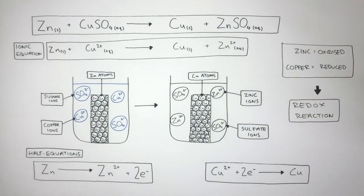In summary, this is a displacement reaction because the zinc displaces the copper from the copper sulfate to form zinc sulfate. And this displacement reaction is a redox reaction, because the zinc atom is oxidized and the copper cation is reduced.